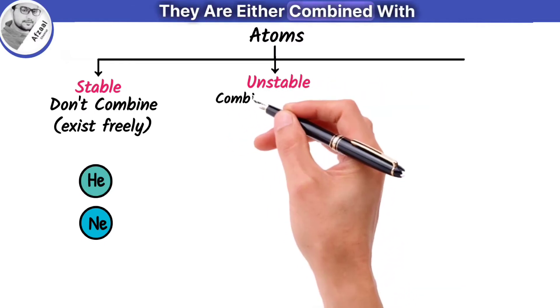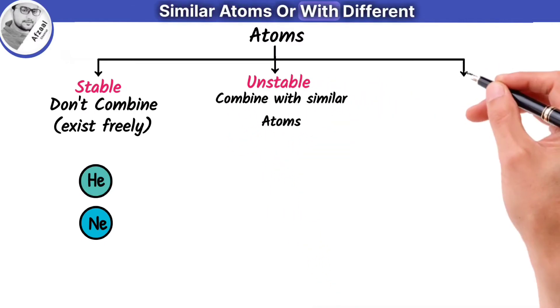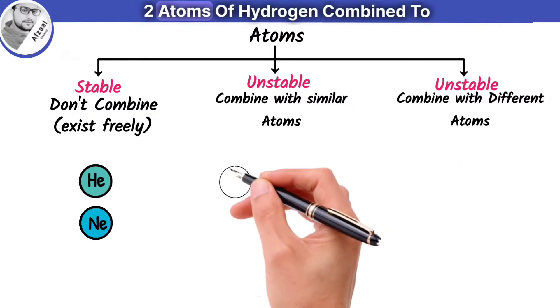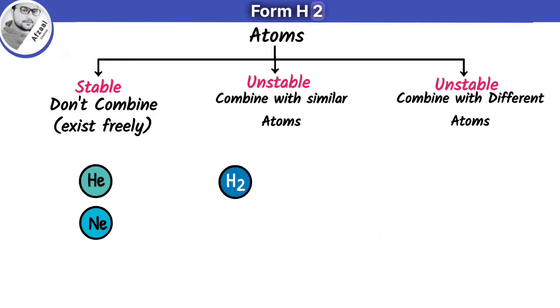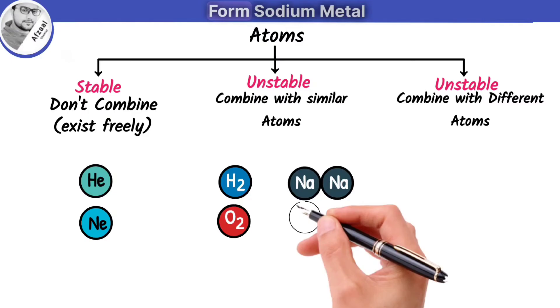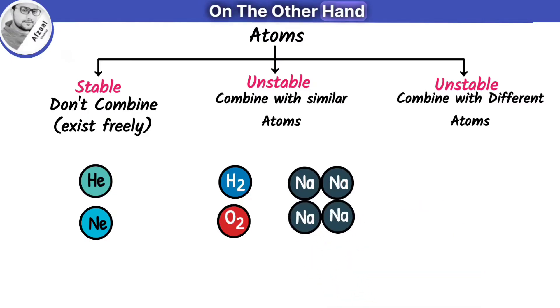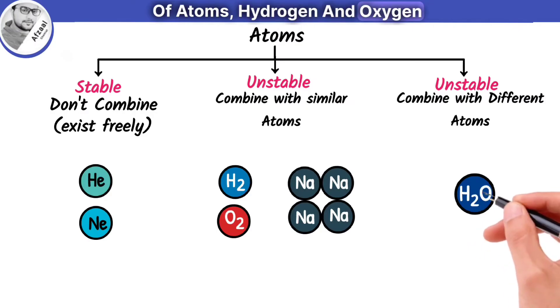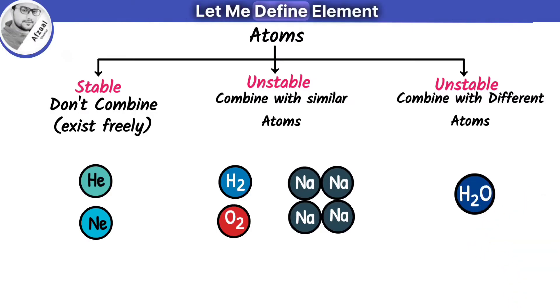They are either combined with similar atoms or with different types of atoms. For example, two atoms of hydrogen combine to form H2. Similarly, two oxygen atoms combine to form O2. Many atoms of sodium combine to form sodium metal. On the other hand, water contains two different types of atoms: hydrogen and oxygen.